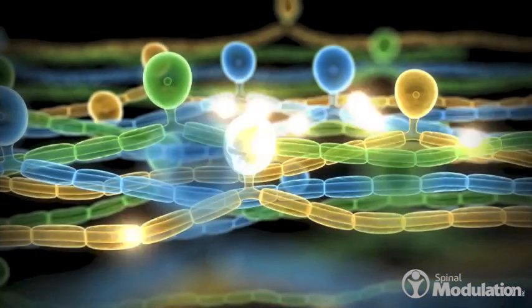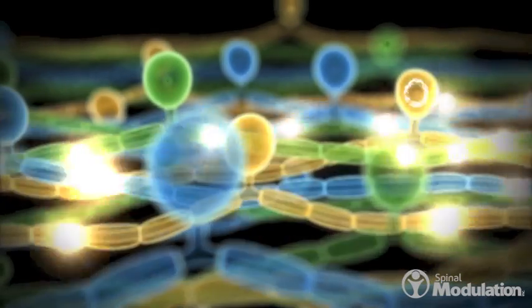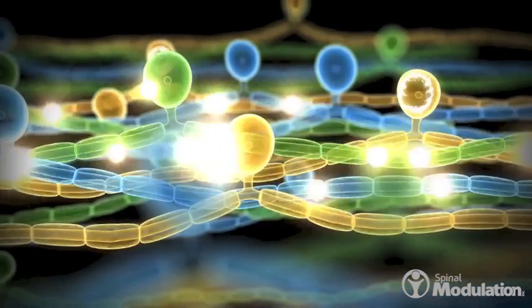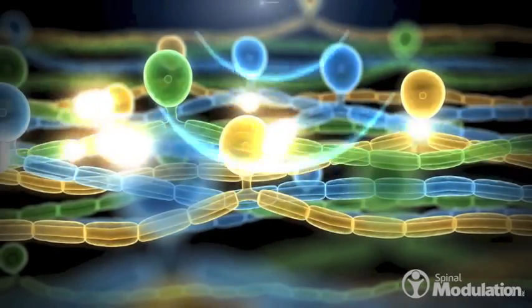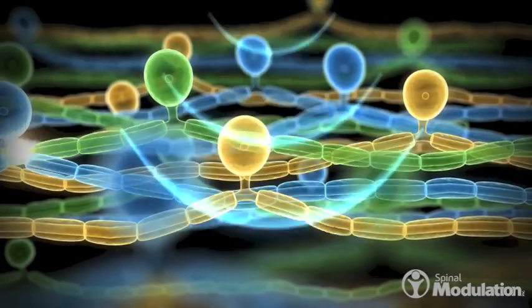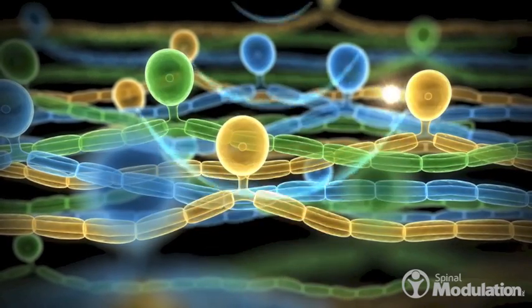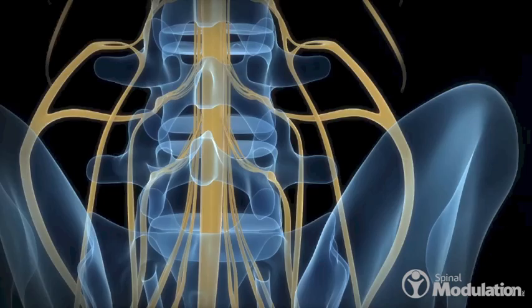In chronic pain states, cell bodies in the DRG become hyperexcitable, causing neurons to fire abnormally. Research has shown that electrical stimulation of the DRG can decrease cell excitability and modulate the sensation of pain.